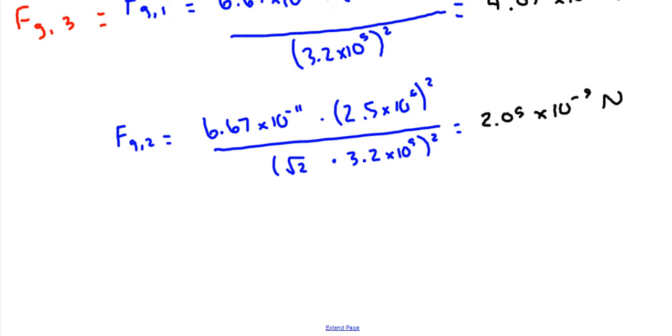So then if we go back to our free body diagram, we have an upward force of 4.07 times 10 to the negative 9th. And we have this 45 degree angle force of 2.05 times 10 to the negative 9th. So 2 is farther away from the rest of them, and so we end up having a smaller force.